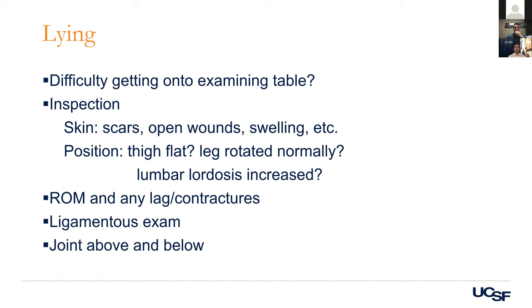The difference between a contracture and a lag: a flexion contracture means you cannot passively correct the deformity. An extensor lag means you can correct it passively, but actively the patient will not be able to fully extend. So a contracture is a loss of passive range of motion, and a lag is a loss of active range of motion. If someone has a 30-degree lag, that means they can't achieve the last 30 degrees of their passive range of motion — the difference between active and passive extension.